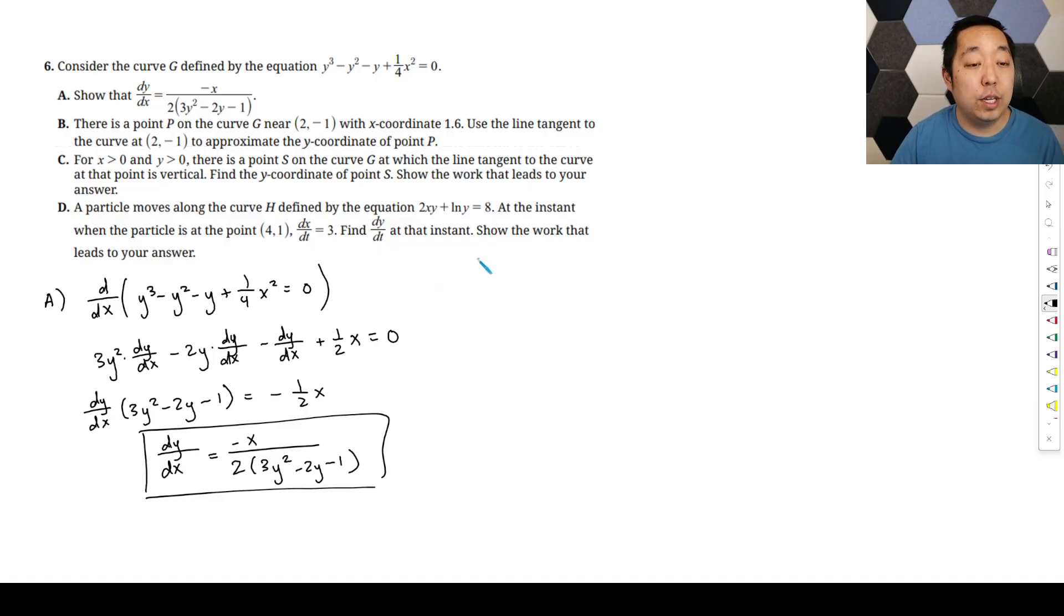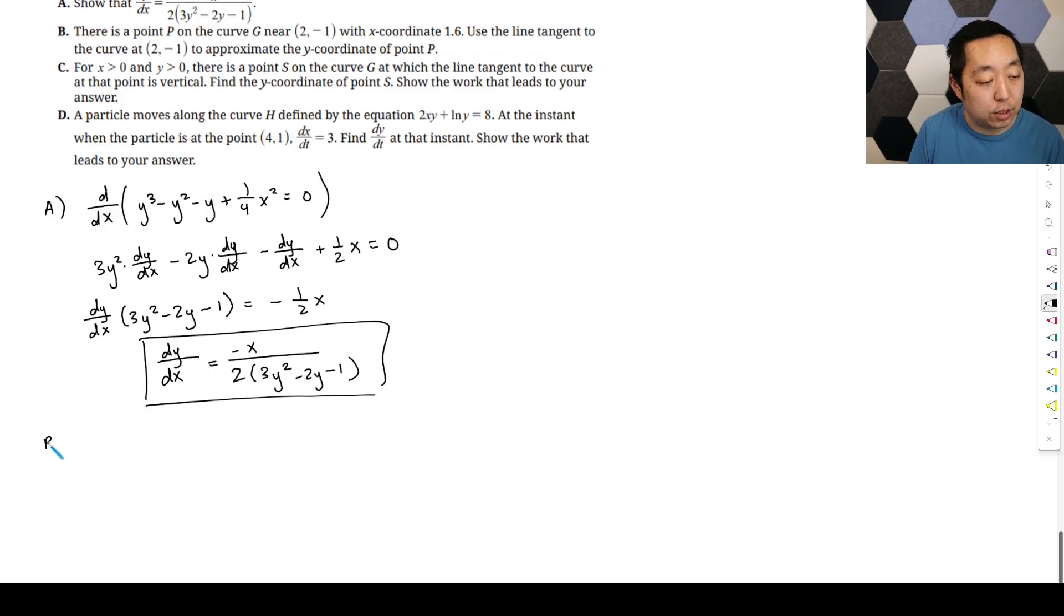There's a point p on the curve near 2 negative 1 with x coordinate 1.6. Use the line tangent to the curve to approximate the y coordinate. So tangent line. So first thing, a lot of steps in there, a lot of words to parse, but the core is use a tangent line. So tangent line is slope point form, right? Always do that. So what's the point?